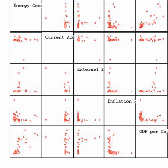Applied statistics comprises descriptive statistics and the application of inferential statistics. Theoretical statistics concerns the logical arguments underlying justification of approaches to statistical inference, as well as encompassing mathematical statistics. Mathematical statistics includes not only the manipulation of probability distributions necessary for deriving results related to methods of estimation and inference, but also various aspects of computational statistics and the design of experiments.